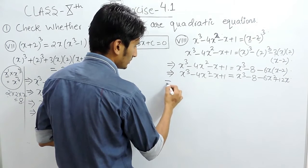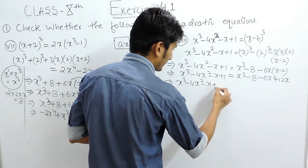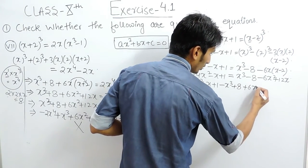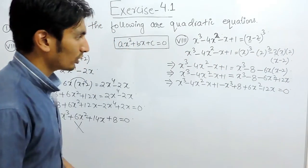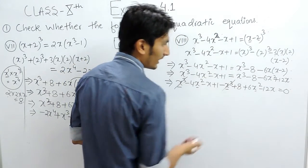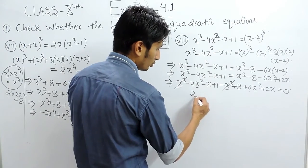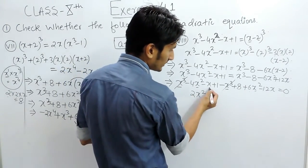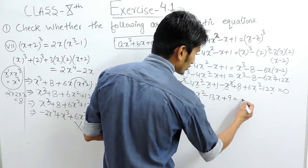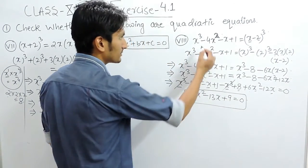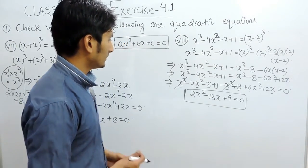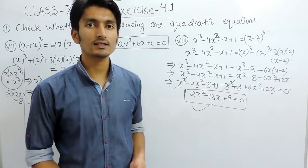Now shift all the terms to the left hand side. Left hand side terms remain as they are, but terms shifted from the right side change sign — positive becomes negative and negative becomes positive. So this equals zero. The x cube terms are like terms and cancel out. The x square terms: 6 minus 4 is 2x square. After that, the x terms give 13x, and the constant term 8 plus 1 is 9. So the simplified form is 2x² + 13x + 9 = 0. Because the maximum power here is 2, this is exactly matching the standard form, so this is a quadratic equation.